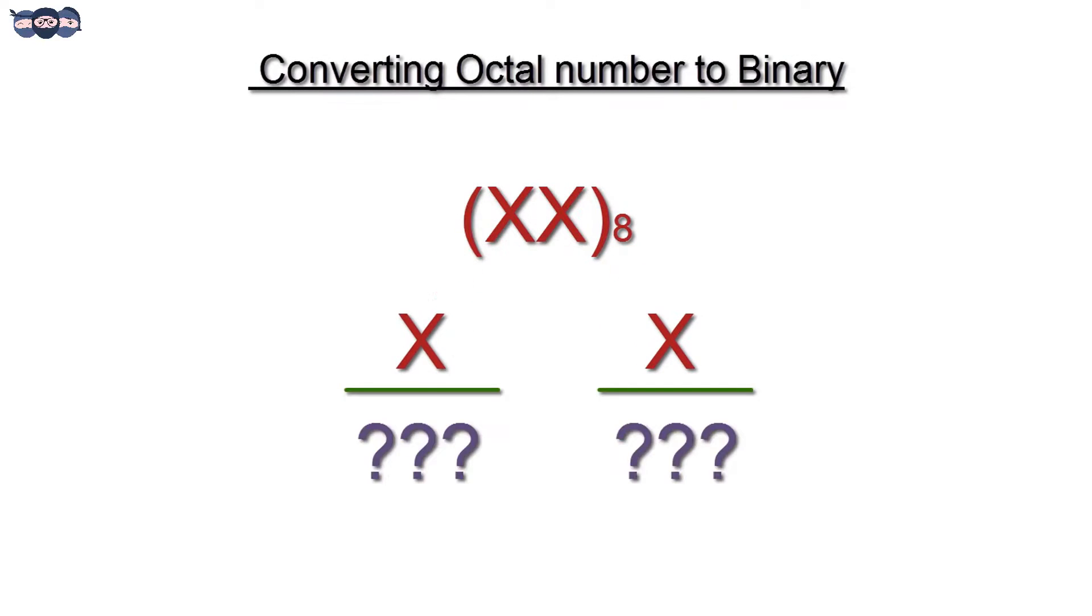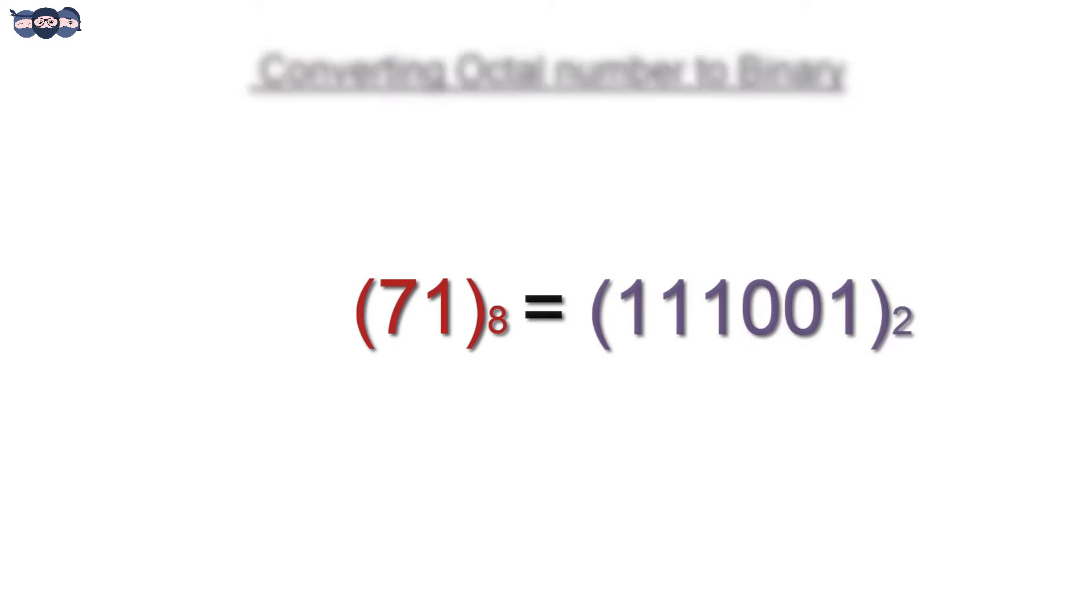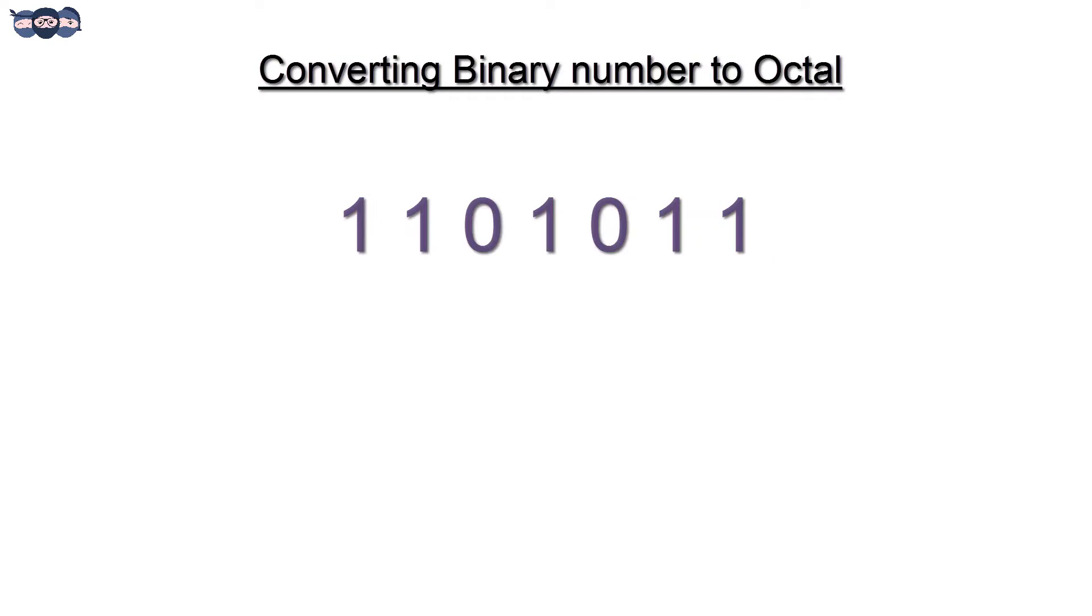In case of octal to binary, each digit of an octal number is represented in its 3 corresponding binary bits. To convert from binary to octal, one just needs to club 3 bits starting from LSB.